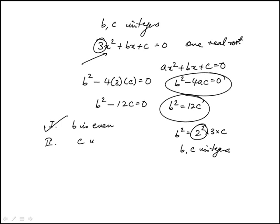Statement II: c is odd. C doesn't have to be odd, because for example, if c is 3 times 4, then it would be b² is 2² times 3 times 4. So now we get b is an integer 2 times 3 times 2, so c doesn't have to be odd.